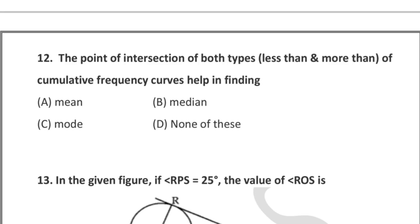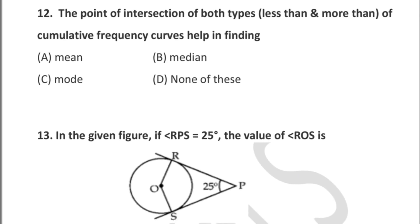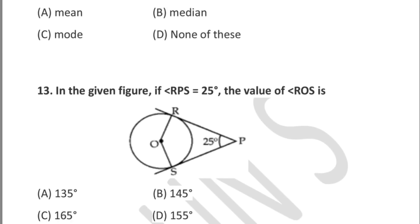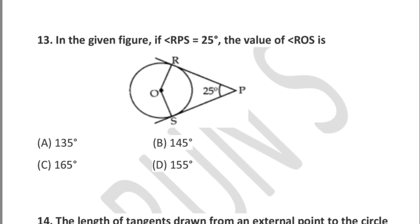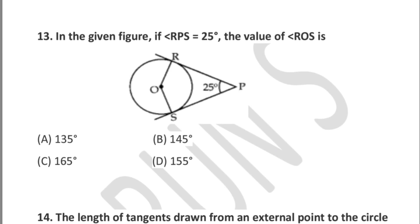Question 12: the point of intersection of both types — less than type ogive and more than type ogive — of cumulative frequency curves helps in finding — mean, median, mode, or none of these.